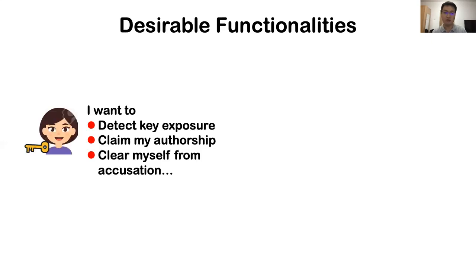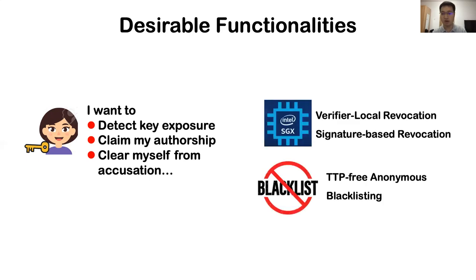On the other hand, the anonymous signing functionality is insufficient in many scenarios. It's necessary to provide other desirable functionalities to make them easy to use. For example, the user may wish to detect a case closure, claim her authorship of a previously signed document, or clear herself from accusation when some bad actor signed something illegal on behalf of a group containing her. In more concrete examples, the EPID signature provided by Intel's SGX is designed to support revoking users at the verifier side and many other features.